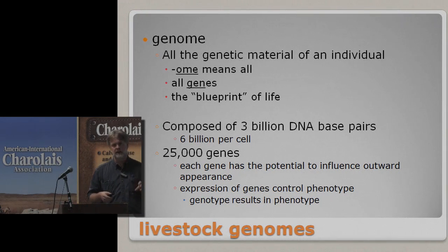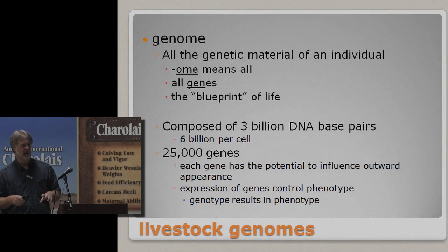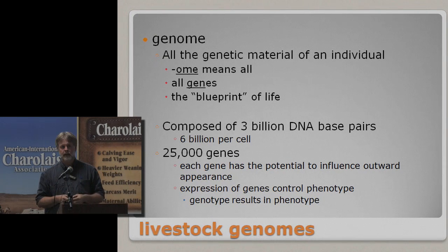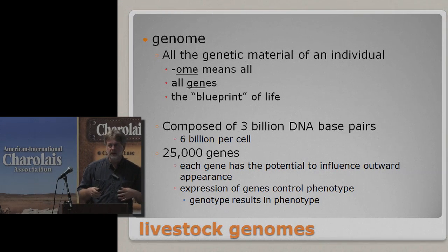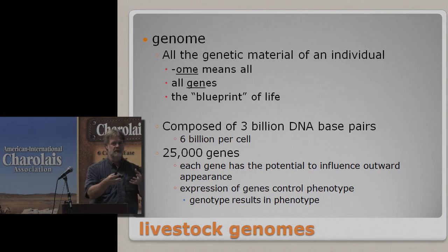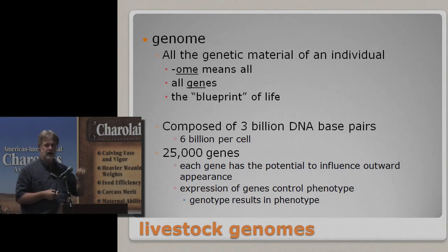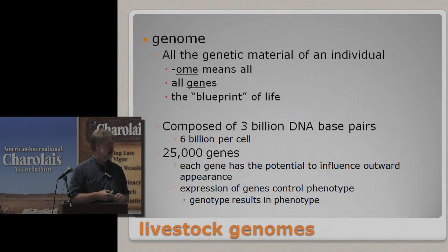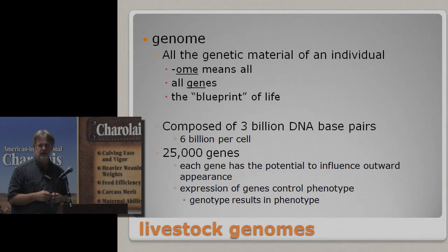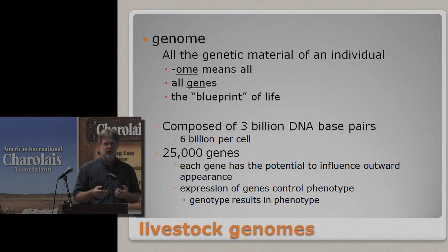A little bit of introduction to this thing called genomics — it's not a scary word. Genome simply means all genes. The suffix '-om' means all, and 'gen' is of course genes. The reason we say genomics is that it's all of the DNA material, all of the genes in an individual that work together in concert to produce the phenotype that you see. Within most mammalian genomes, there's about 3 billion DNA base pairs, and within those 3 billion base pairs there's information encoded for about 25,000 genes. It's these genes that, through their expression, perform various functions through the development of individuals.